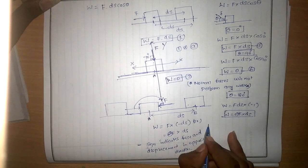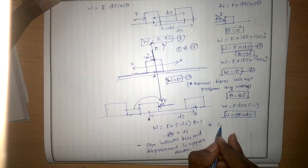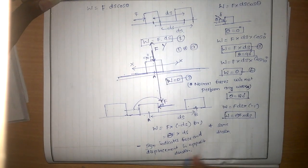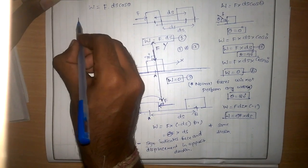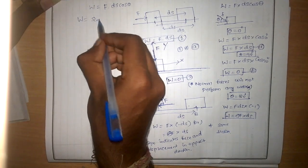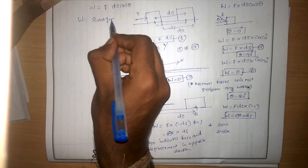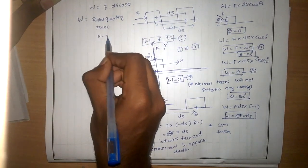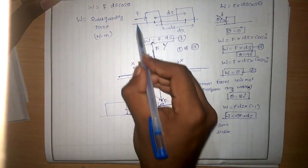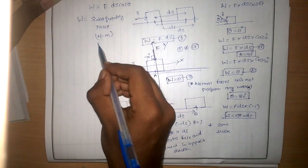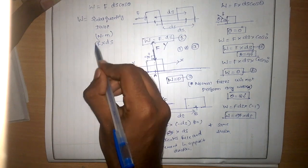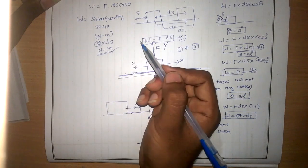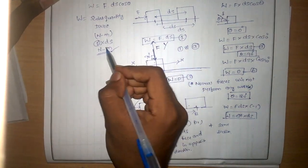The positive sign indicates that force and displacement are in the same direction, while the negative sign indicates they are in opposite directions. Work W is a scalar quantity having the units of Joules, that is Newton·meter. The force is measured in Newtons and displacement in meters, hence the unit Newton·meter.